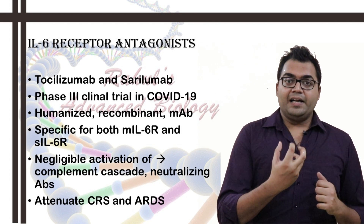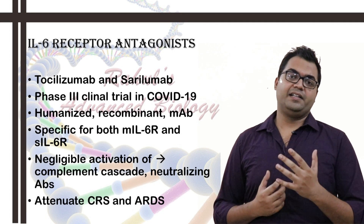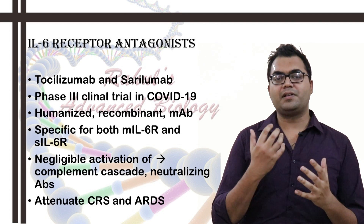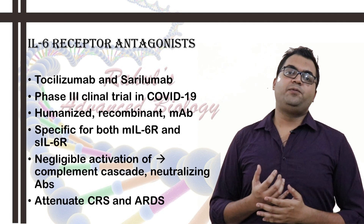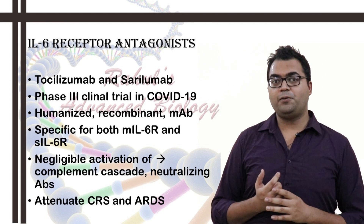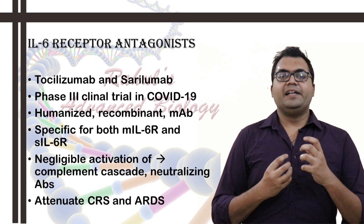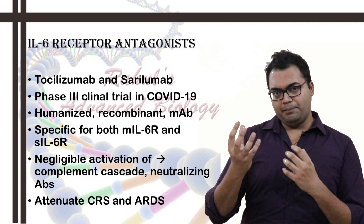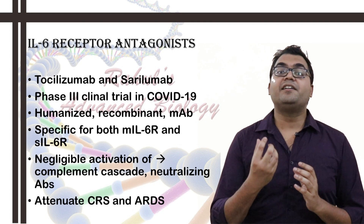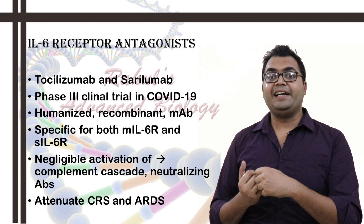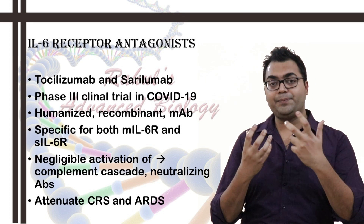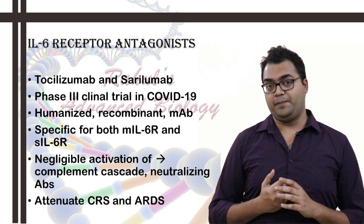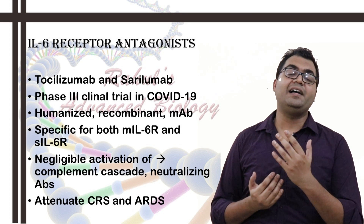There are various types of IL-6 antagonists which have been in the market. In my previous video I talked about tocilizumab. Here I would like to talk about sarilumab, which is also currently under Phase 3 clinical trial. It was approved by the Food and Drug Administration USA in May 2017 for rheumatic diseases. Sarilumab is a completely humanized recombinant monoclonal antibody. Since it has a potent IL-6 receptor antagonist activity, it can be administered via the subcutaneous route.